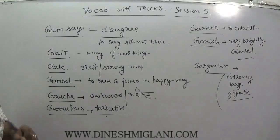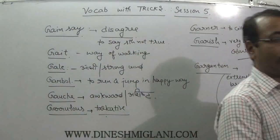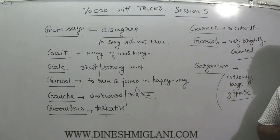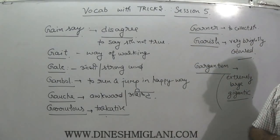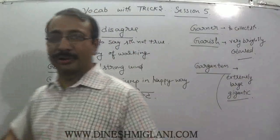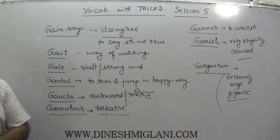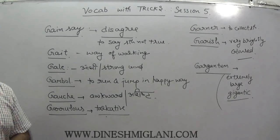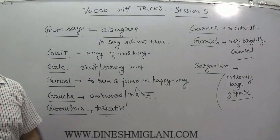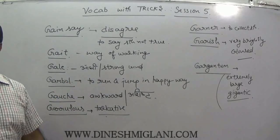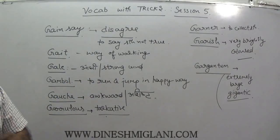Let us revise. First word was gainsay — saying something for profit; customer will never accept it, so it means to disagree or say something not true. Next, gait — I walked to India Gate; gait means way of walking. Then gale — Chris Gayle; gale means strong wind or aandhi. Then gambol, G-A-M-B-O-L — after winning at gamble, you run home happily; gambol means to run and jump in a very happy or delightful way. Gauche, G-A-U-C-H-E — associated with Ghatotkacha, who was a demon, and demons are clumsy and awkward; so gauche means awkward or asisyt.